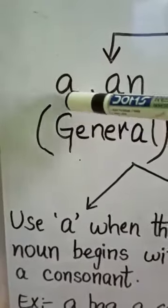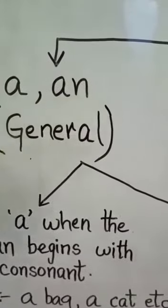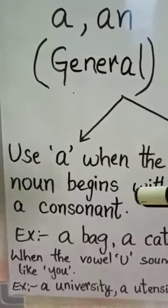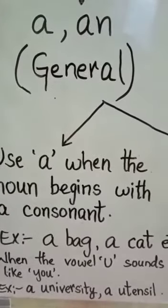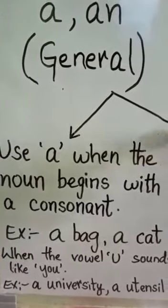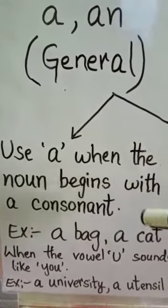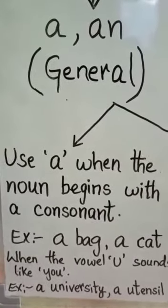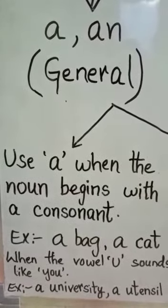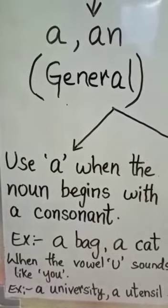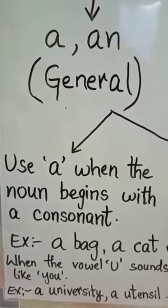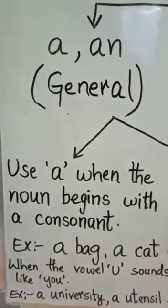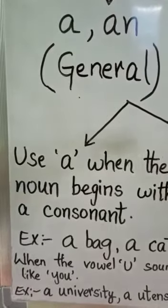Now let us see when do we use A and when do we use an. So first of all, let us see usage of A. When do we use A? We use A when the noun begins with a consonant. Consonant letters you know already children, right? B, C, D, F, G, H, J, K, L, M, N, P, Q, R, S, T, V, W, X, Y and Z. So these are the consonants.